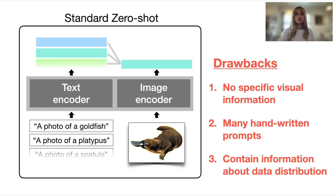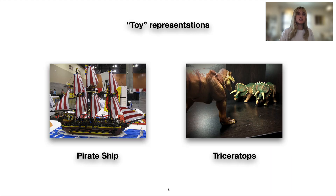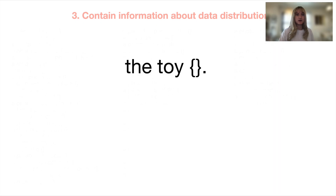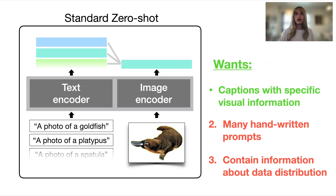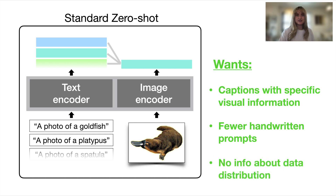The final challenge is that we often need to know information about the data distribution in order to write effective prompt templates. For example, ImageNet contains some images which are toy representations of the given category, and therefore also contains 'the toy blank' as a prompt template. So in summary, we want a method for creating these captions that addresses these challenges — specifically, we want our captions to contain specific visual information, require fewer handwritten sentences, and not use prior knowledge about the data distribution.